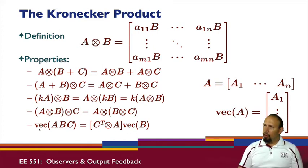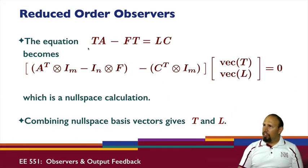We can show that this equation can be written in terms of Kronecker products this way. I'm basically taking the VEC of all of these terms. These two terms give us these two terms. This term gives us this. We have this thing times the VEC of T, VEC of L equal to zero. This is a null space calculation. We form this matrix, compute the null space of it, and the null space vectors can be used to obtain T and L.